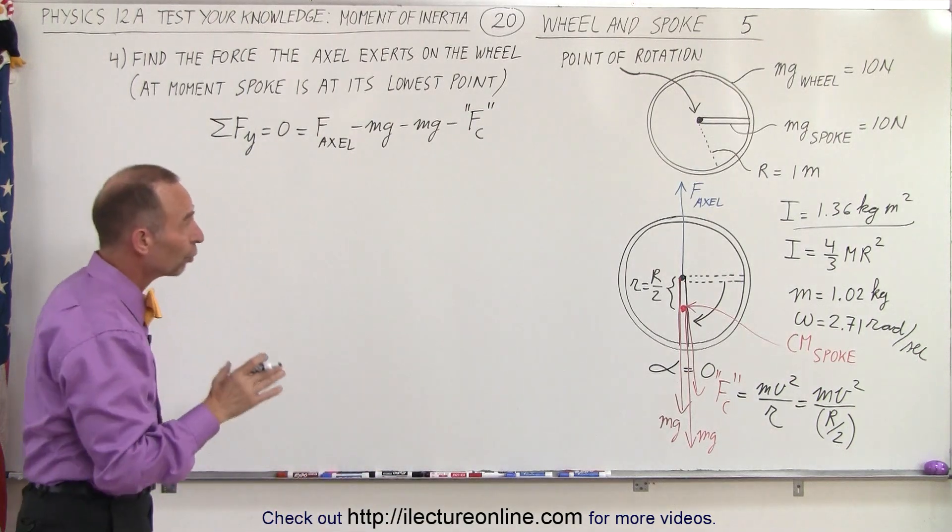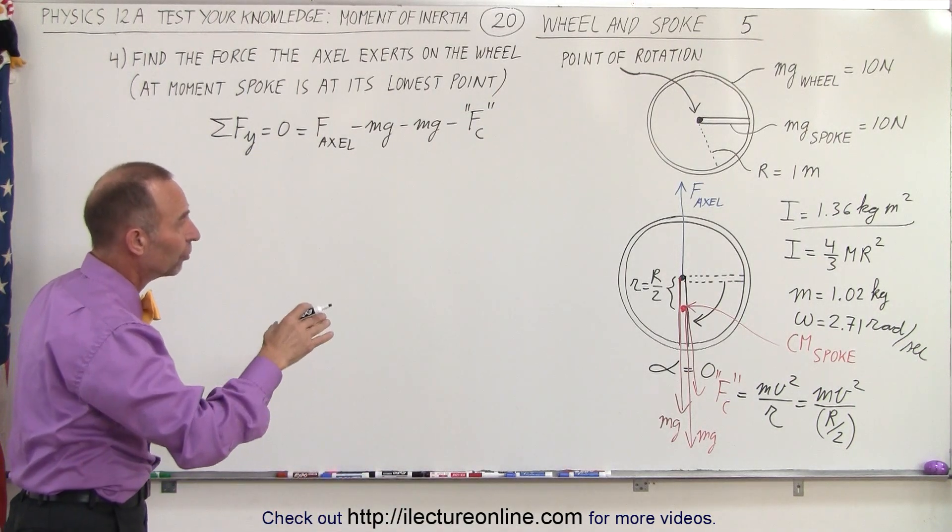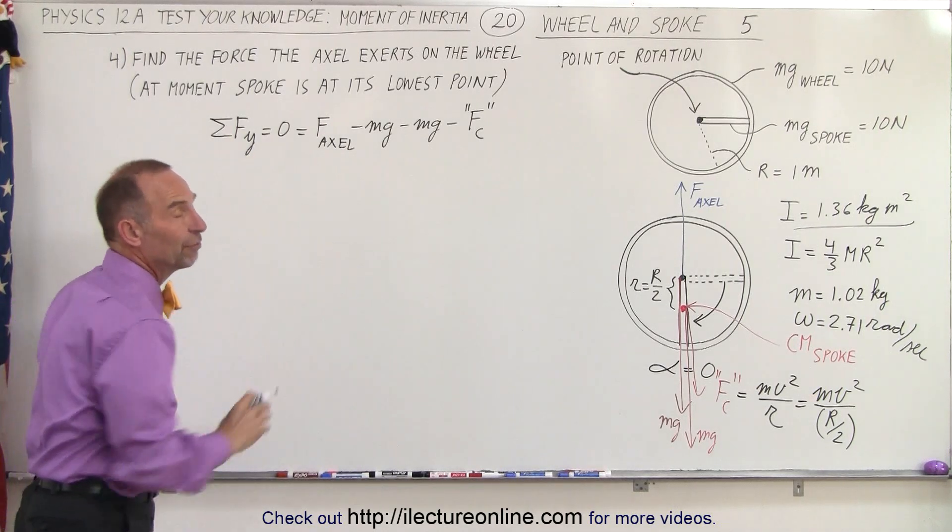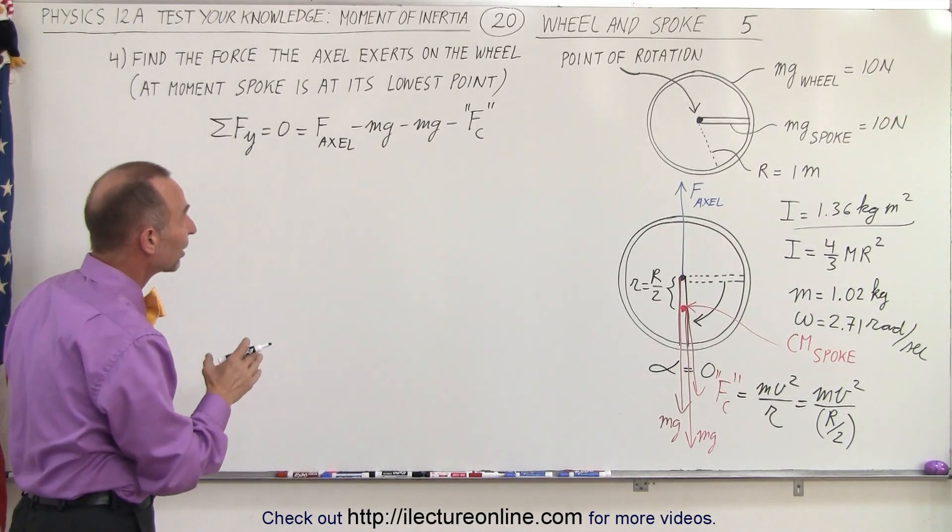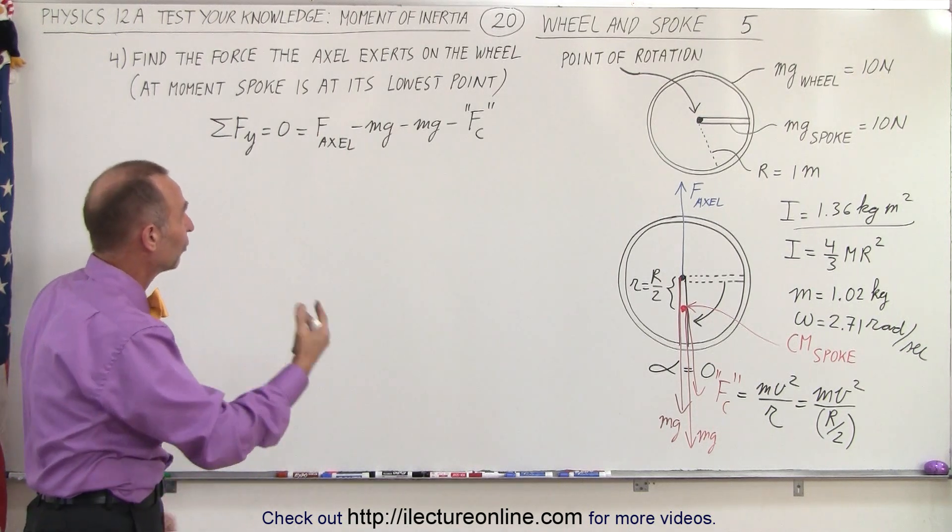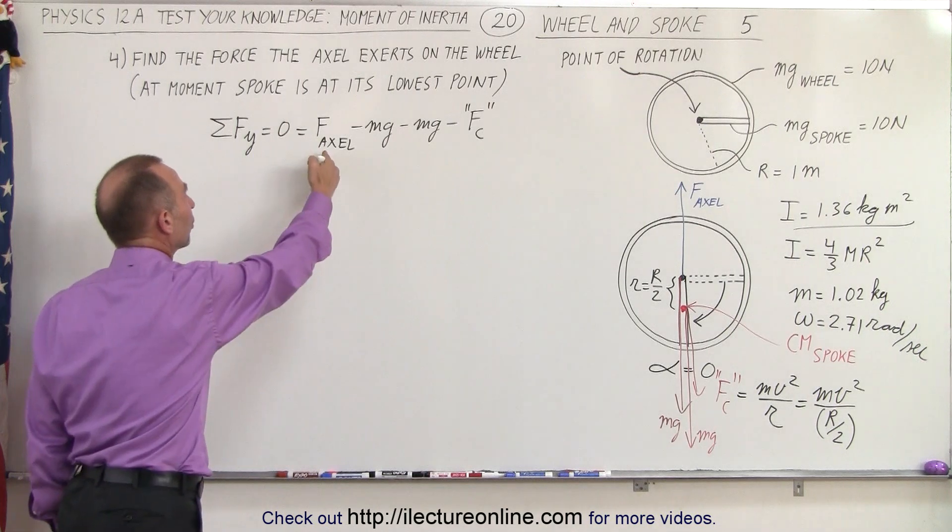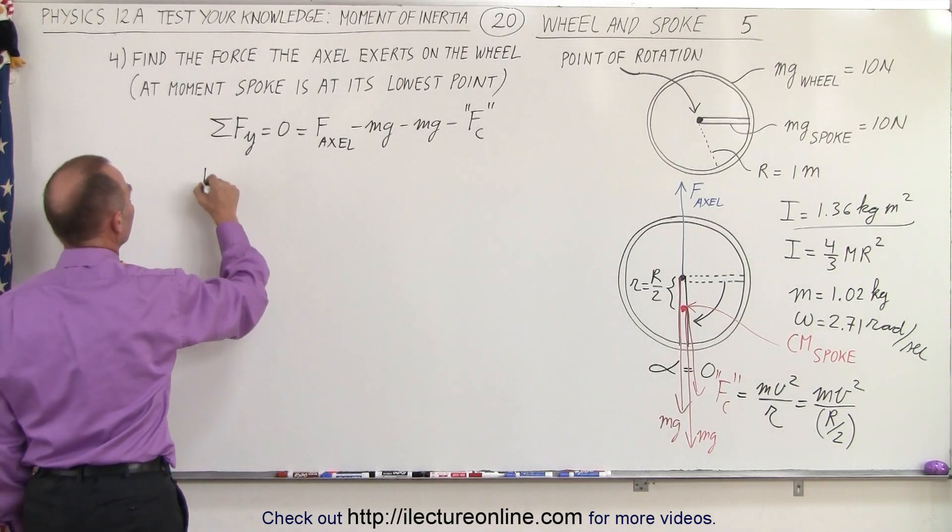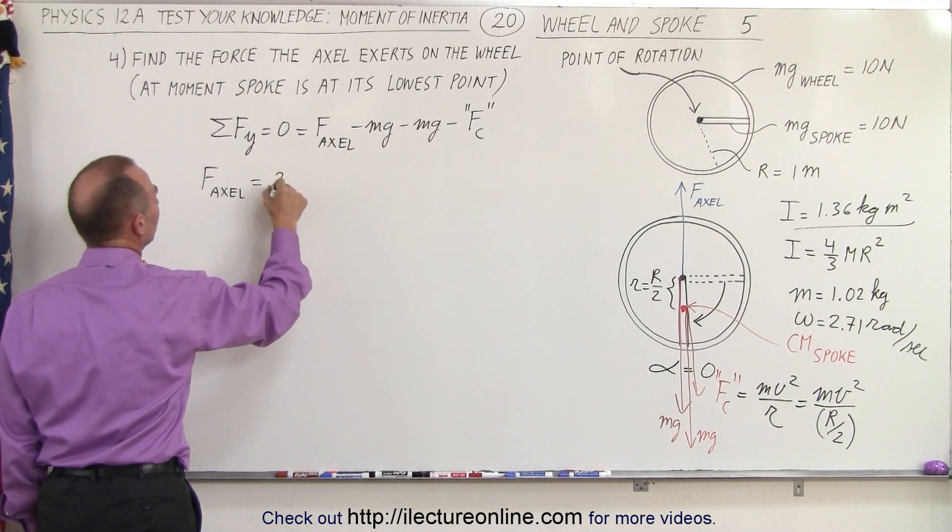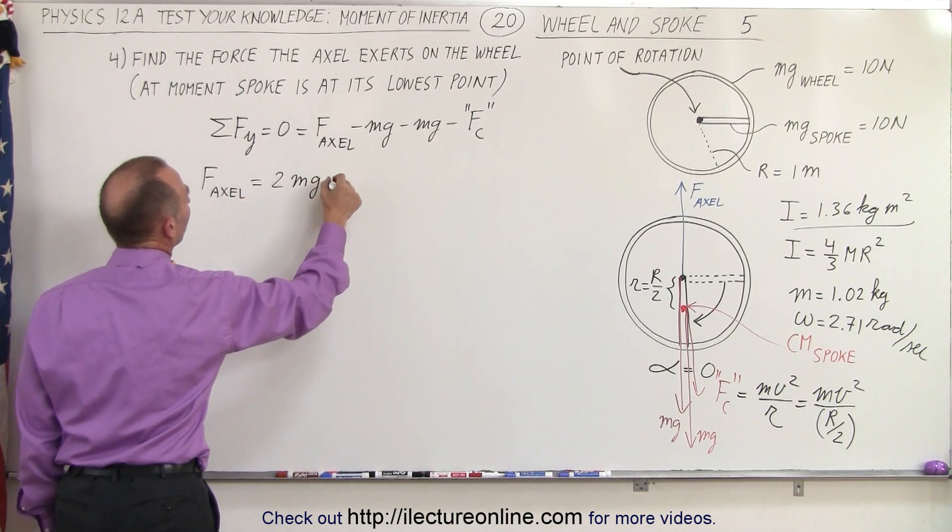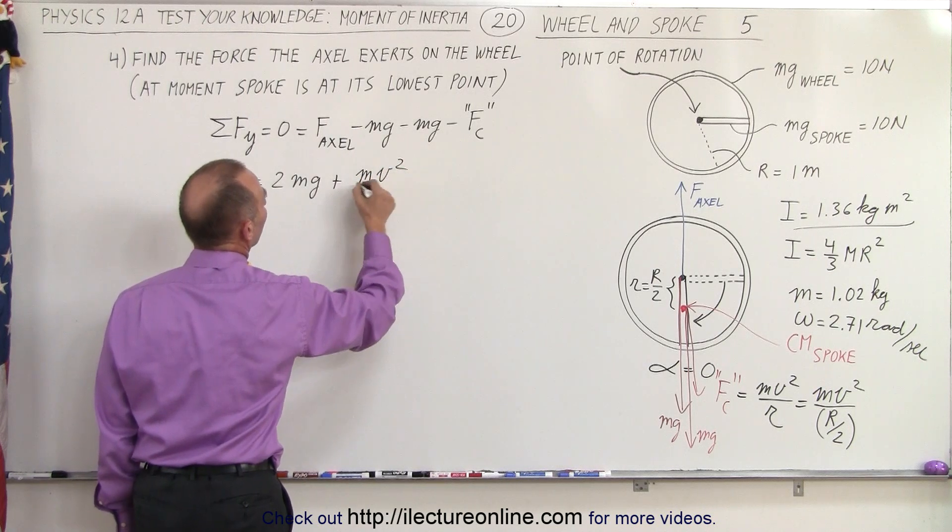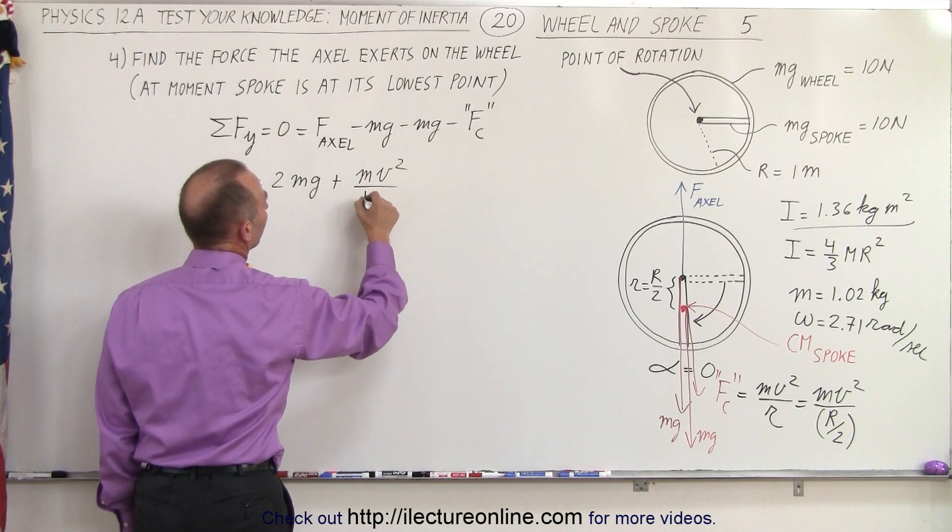Which means that the total force that the axle exerts on the wheel has to counterbalance all three forces: the weight of both objects plus the centrifugal force, which acts outward, so we need to provide additional force by the axle. That means the force of the axle is equal to 2 times mg plus the centrifugal force, which is mv squared over r divided by 2.